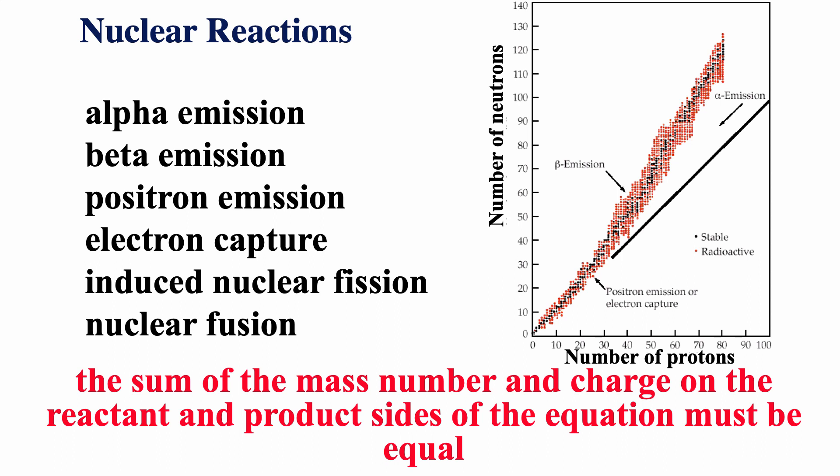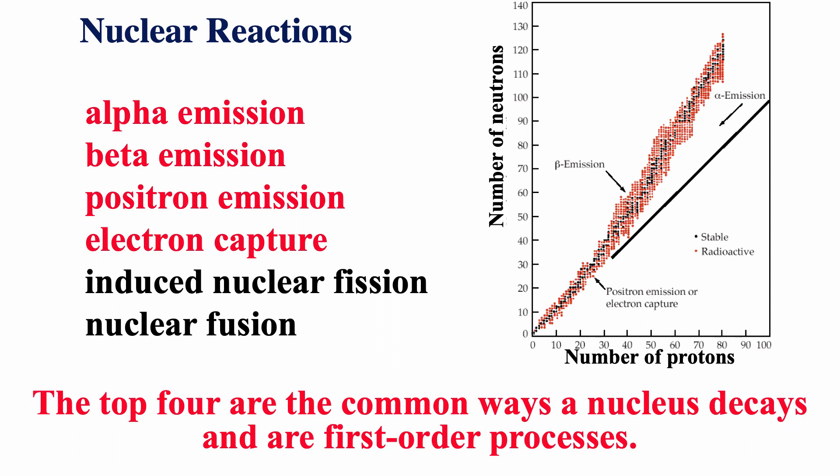Some nuclear reactions we could talk about: alpha emission, beta emission, positron emission, electron capture, induced nuclear fission, nuclear fusion. If you remember, in terms of nuclear reactions, to make sure it's balanced, you always have to make sure that the mass numbers are the same products and reactants and the charges are the same products and reactants. That's true for all six of those nuclear reactions. Now only the top four are actually first-order processes. So all nuclear decays are first-order processes, but not all nuclear reactions are first-order processes.